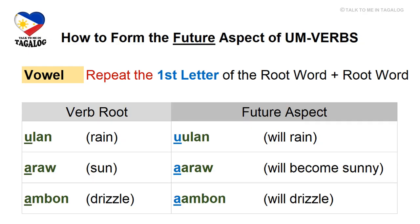Now let's study how to form the future aspect of um-verbs. For root words that begin with a vowel, just repeat the first letter of the root word. For example, ulan: repeat 'u', so it becomes uulan, meaning 'will rain.' Araw: future aspect is aaraw, meaning 'will become sunny.' Ambon: future aspect is aambon, meaning 'will drizzle.'